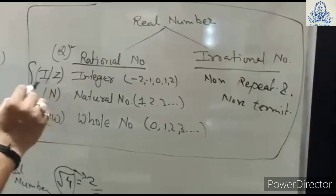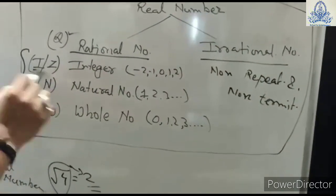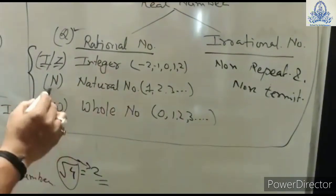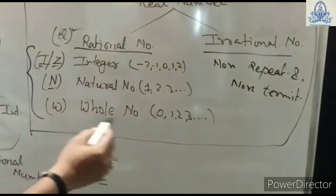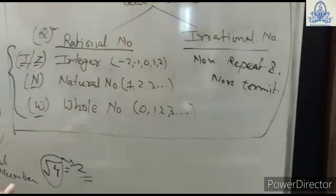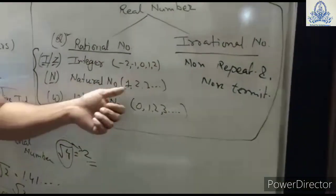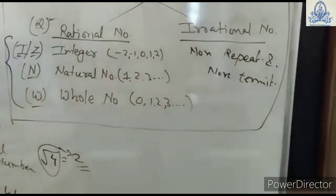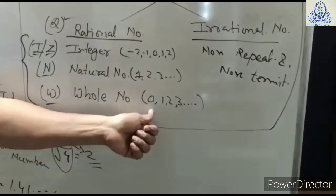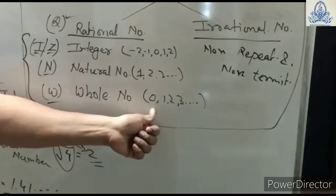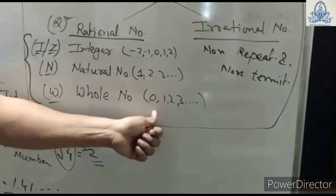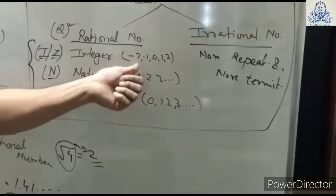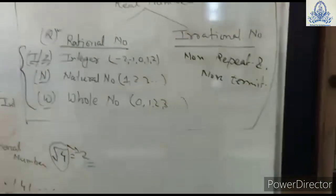The symbol for rational numbers is Q, for integers it is Z or I, for natural numbers it is N, and for whole numbers it is W. Natural numbers are counting numbers from 1 to infinity (positive). Whole numbers consist of 0 and natural numbers, and integers consist of all of them — negative numbers, zero, and positive numbers.